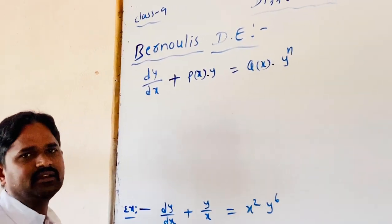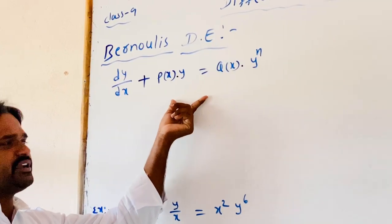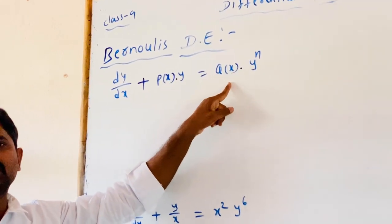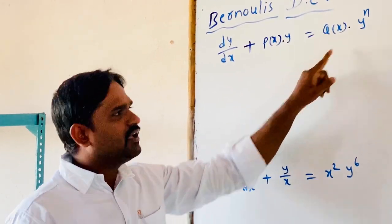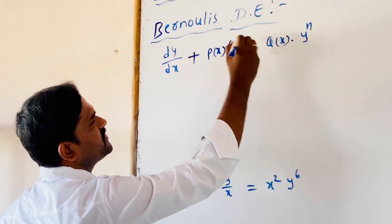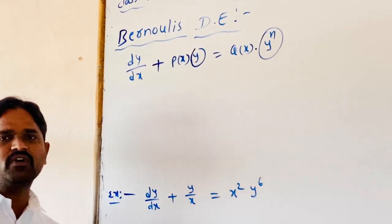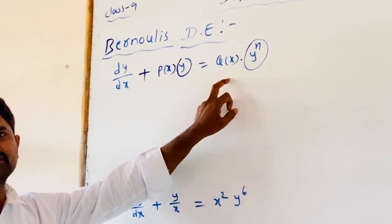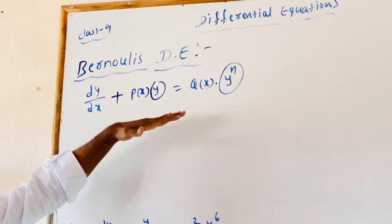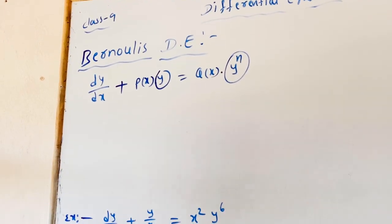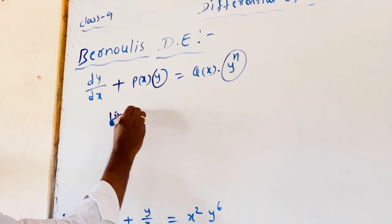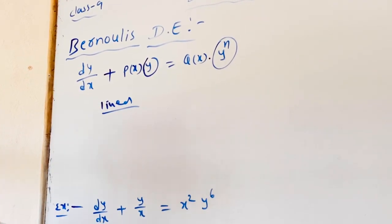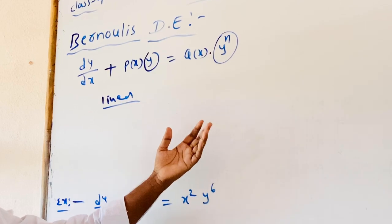An additional term y^n is added to the linear differential equation, where P(x) and Q(x) are continuous functions in x. These are two terms in the same function y and y^n. By dividing the total differential equation with y^n, it will be turned into a linear differential equation in the same form except y^n. Then, we know the solution of the linear differential equation.